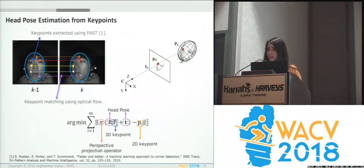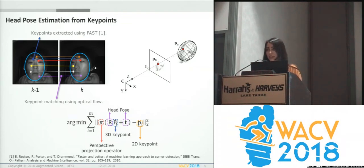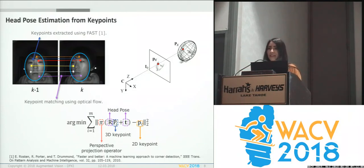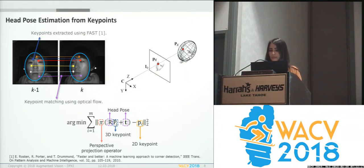For head pose estimation from key points, we are using FAST to detect key points and optical flow for tracking. To obtain the 3D key points, we project back the 2D points into an ellipsoidal head model. Then we minimize the reprojection error from 3D to the correspondences to obtain the head pose, which is the rotation and the translation.